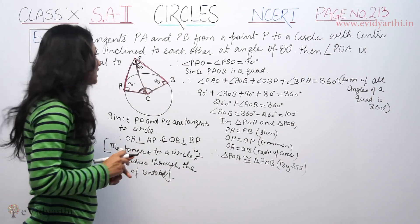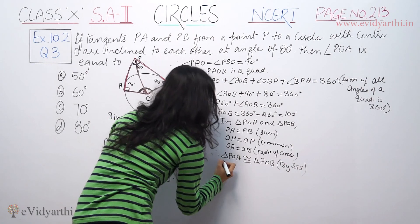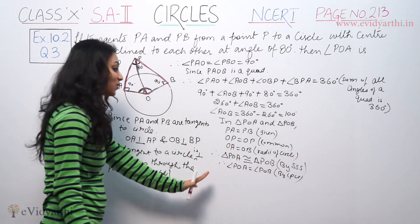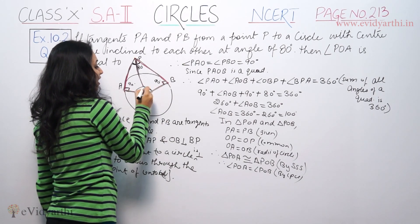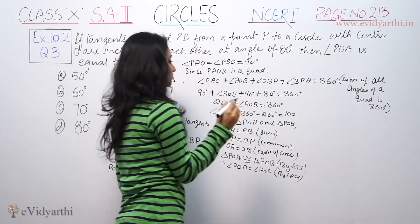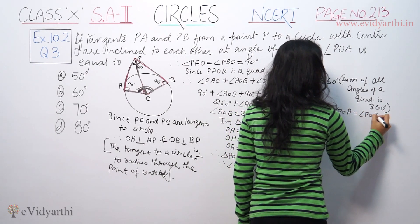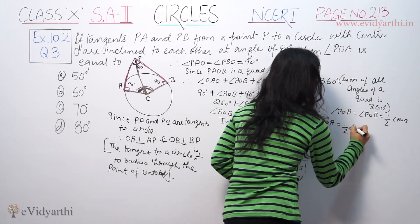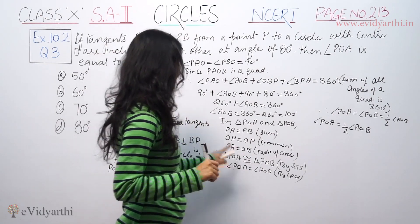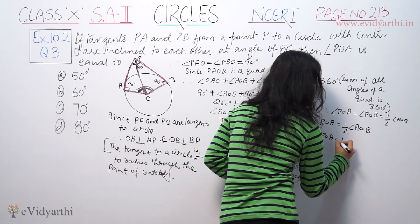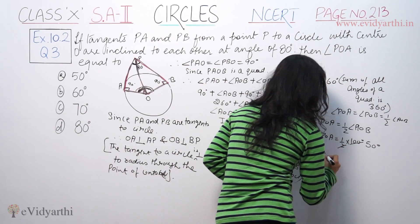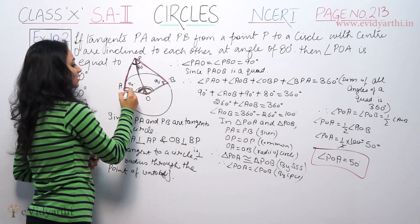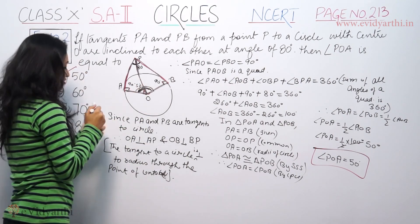By CPCT, angle POA = angle POB. Since both angles are equal and together they form angle AOB, each is half of AOB. Therefore, angle POA = angle POB = half of angle AOB = half of 100 degrees = 50 degrees. So angle POA = 50 degrees, which is the correct answer.